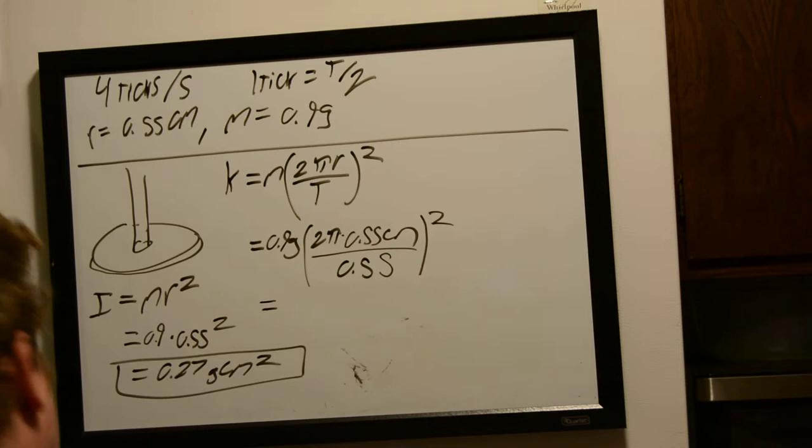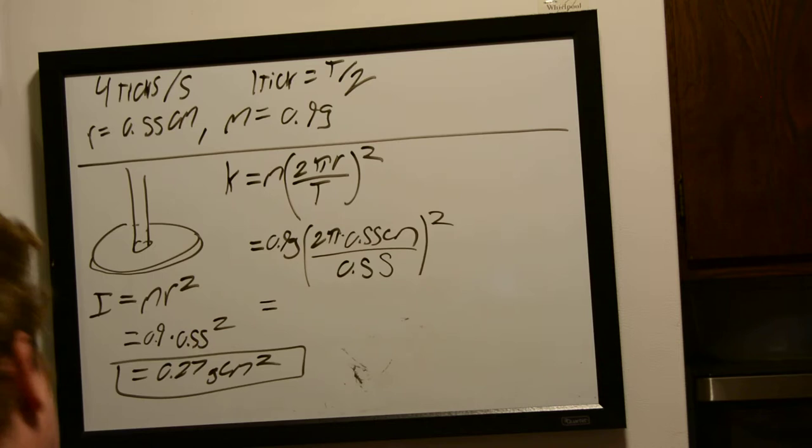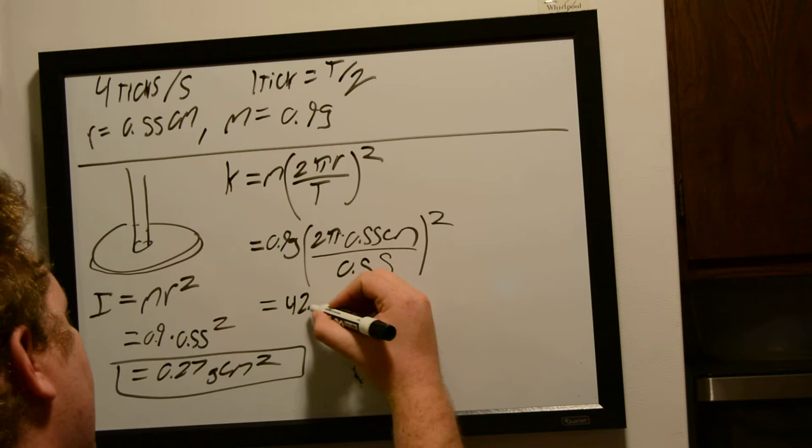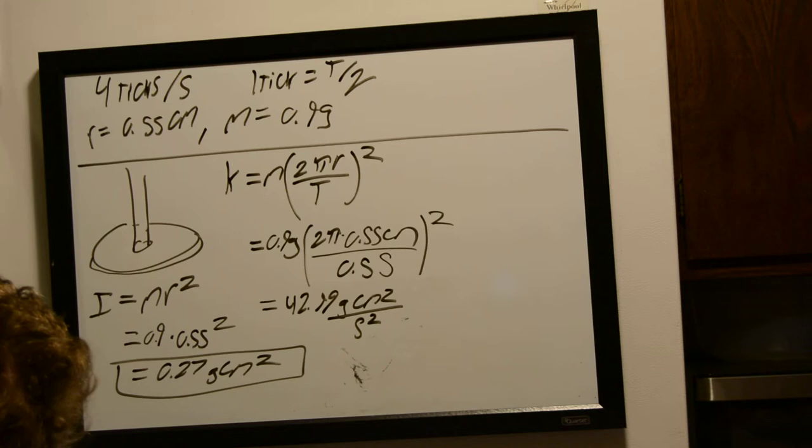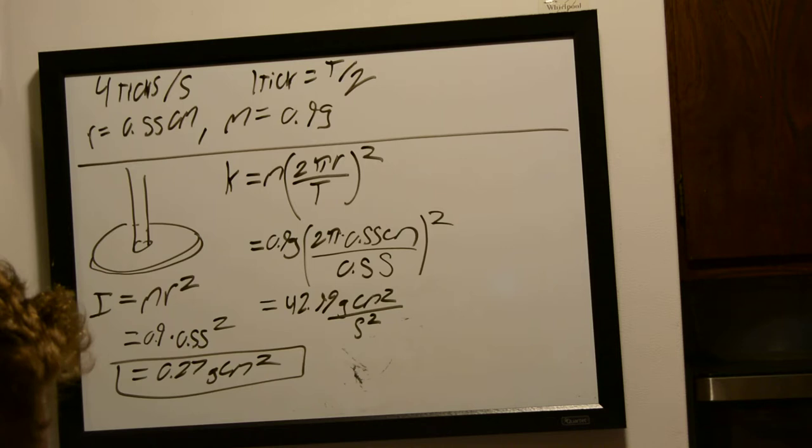we do all this math, and we find that our torsion constant is 42.99 grams centimeters squared per second squared. And the torsion constant is given in newton meters per radian. So, what we need to do is convert all of this to newtons and meters.